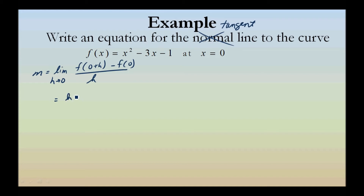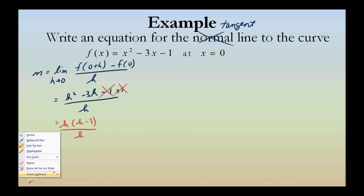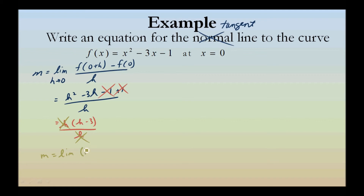That equals h squared minus 3h minus 1 plus 1 divided by h. We can get rid of the canceling terms and yield h times h minus 3 divided by h. We can cancel, and we're left with m equals the limit of h minus 3 as h approaches 0, giving us m equals negative 3, the slope of the tangent line at x equals 0.